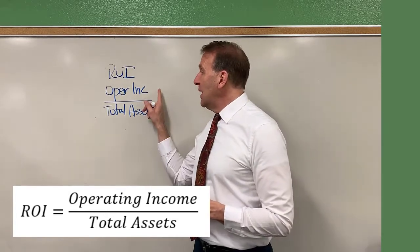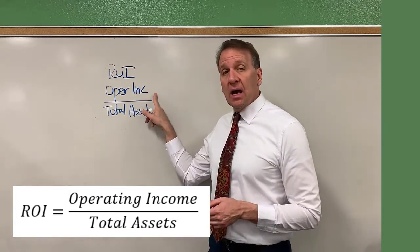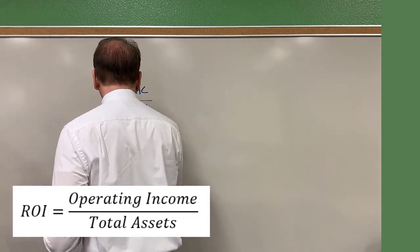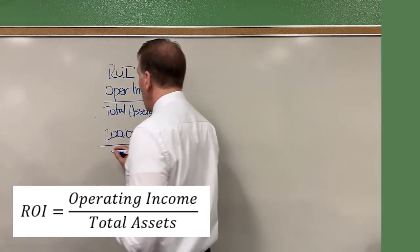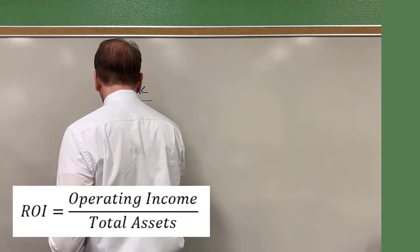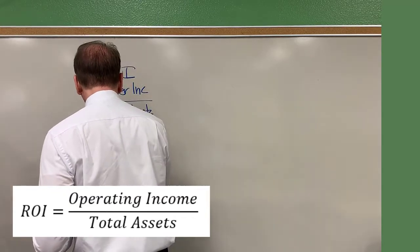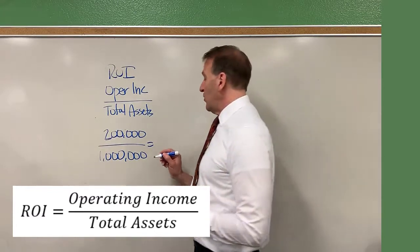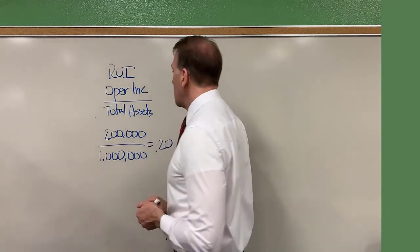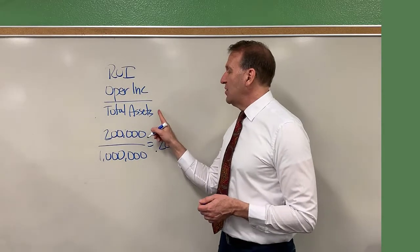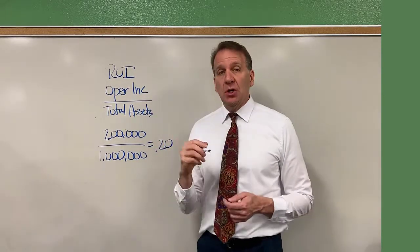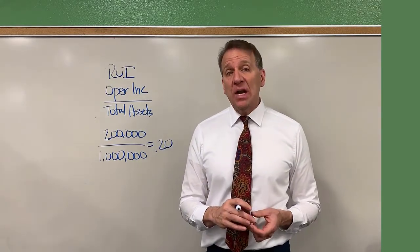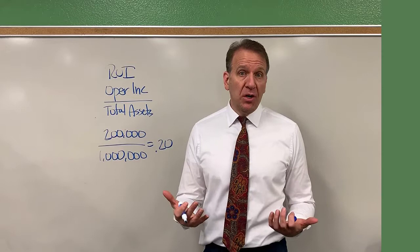So when we're calculating this, let's assume that our operating income for this time period is $200,000, and our total assets are $1 million. Then our return on investment is 0.2, or 20%. Our assets are generating us a 20% return — hence return on investment.